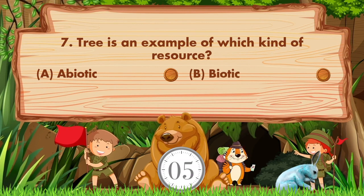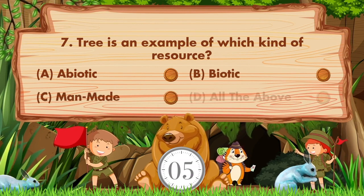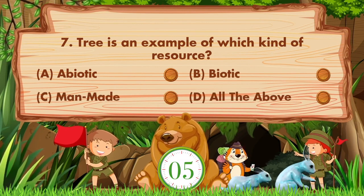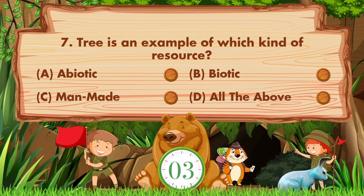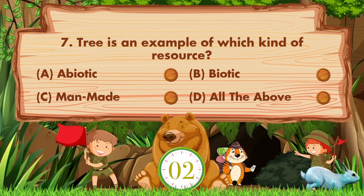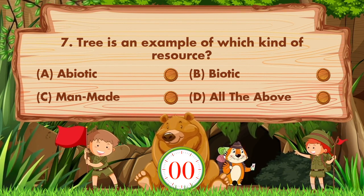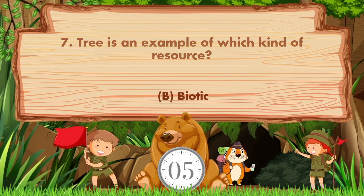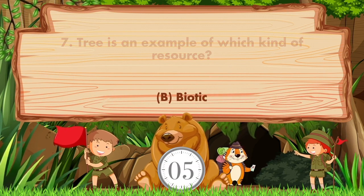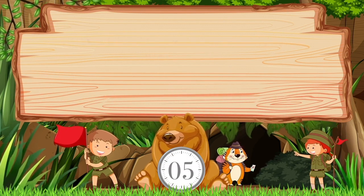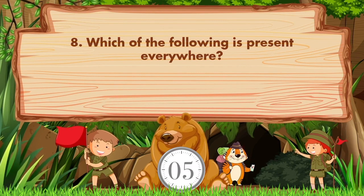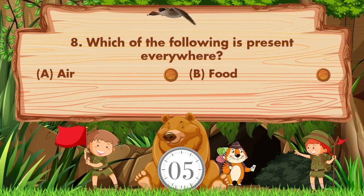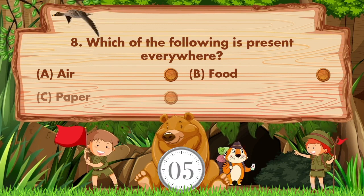Tree is an example of which kind of resource? Option A abiotic, B biotic, C man-made, D all the above. Answer is option B, biotic. Which of the following is present everywhere? Option A air, B food, C paper, D...